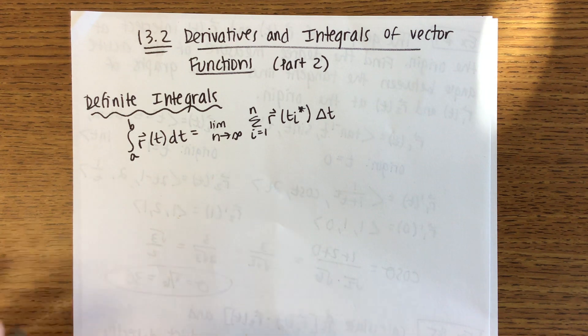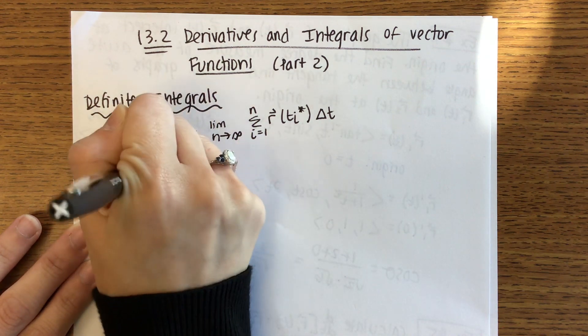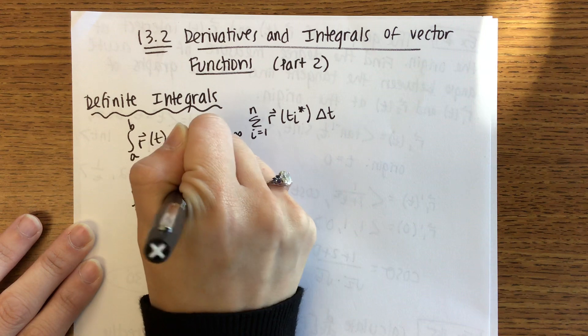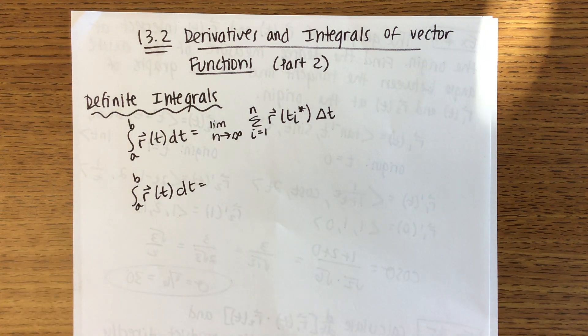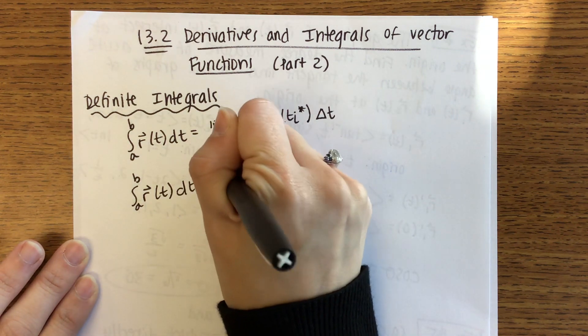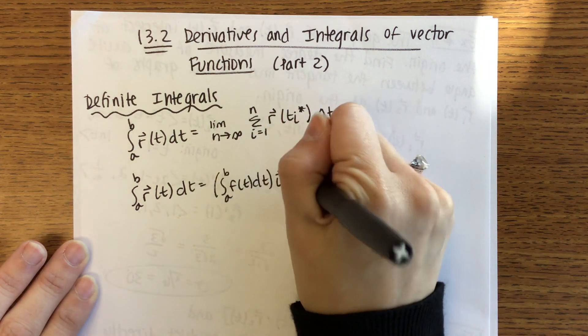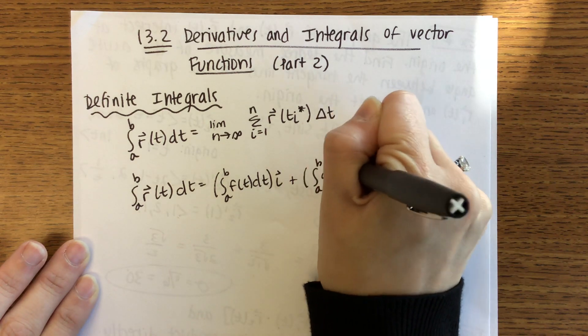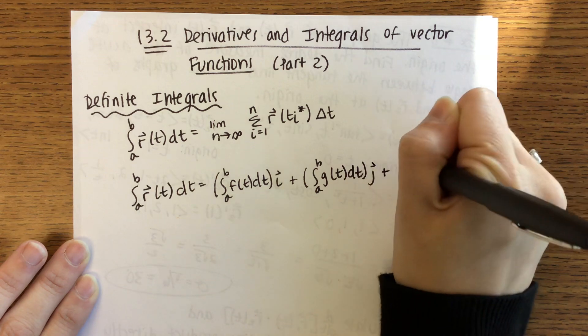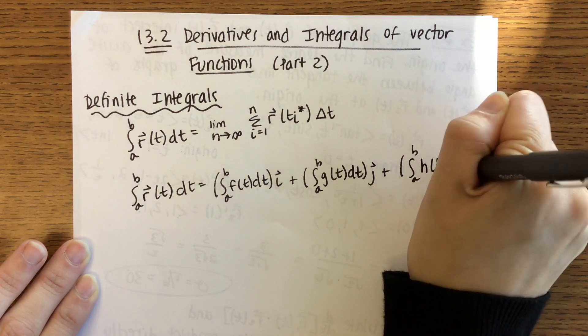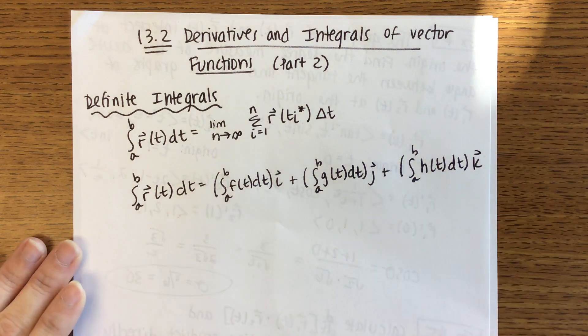Now, we're not going to be using that. I expect you to know it and understand it, but we're not going to use it. Instead, we're going to use the following theorem. It's going to be really similar to derivatives. If I want to take the integral from a to b of a vector function, you're going to take the integral of each of the component functions. So this will be the integral from a to b of f(t) dt, all that multiplied by i, plus the integral from a to b of g(t) dt, multiplied by j, plus the integral from a to b of h(t) dt, multiplied by k.